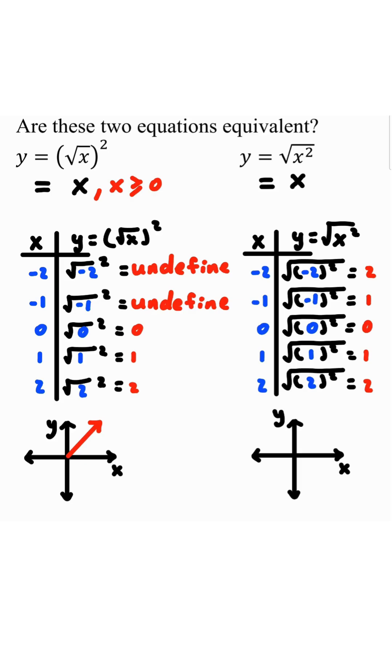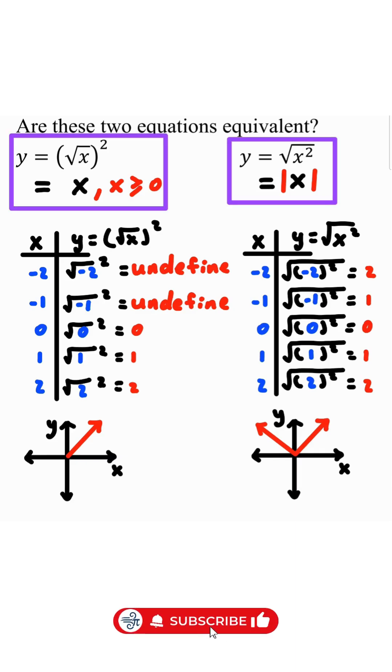And so, we'll make a table of values. If we graph it, we'll notice it looks like this. It looks like a v-shape. So in reality, y equals square root of x squared is really just the absolute value of x. Did you get these two correct? So this is all for more math content. Thank you.